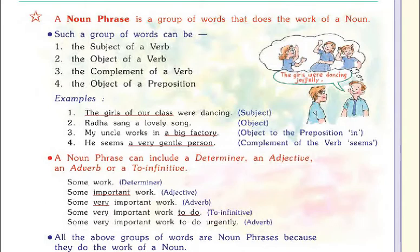So here we have learned about the adjective phrase, the adverb phrase, and the noun phrase. You have to remember the parts of speech — adjective, adverb, and noun — so that you can add some words and make phrases of adjective, adverb, and noun. Our chapter is completed here. Read and revise it once again. Thank you.